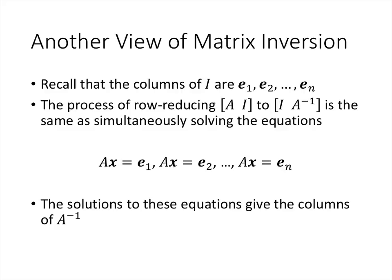Another way to view this process: since the columns of the identity matrix are the standard basis vectors e1, e2, and so on, row reducing [A | I] to [I | A⁻¹] is the same as simultaneously solving AX = e1, AX = e2, and so on. We're solving n systems of equations simultaneously, and each solution in the augmented columns gives us a column of A inverse.